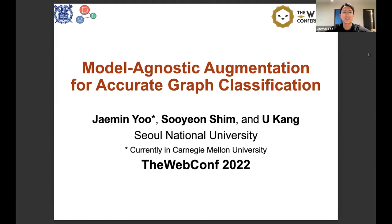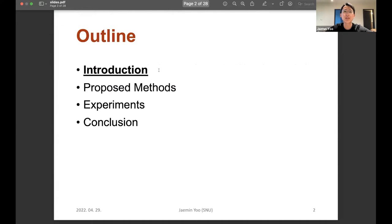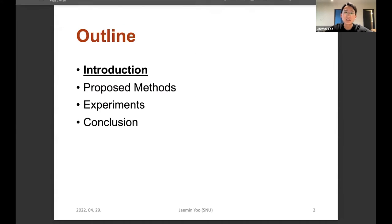Hello, everyone. I'm Jeming New from Carnegie Mellon University, and I'm going to talk about our work, Model Agnostic Augmentation for Accurate Graph Classification. This work was done while I was at Seoul National University with Sooyeon Sim and Professor Yukang. Let me introduce our work first, and then go into the other sections.